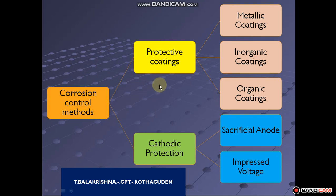There are two types of corrosion control methods: protective coating and cathodic protection.